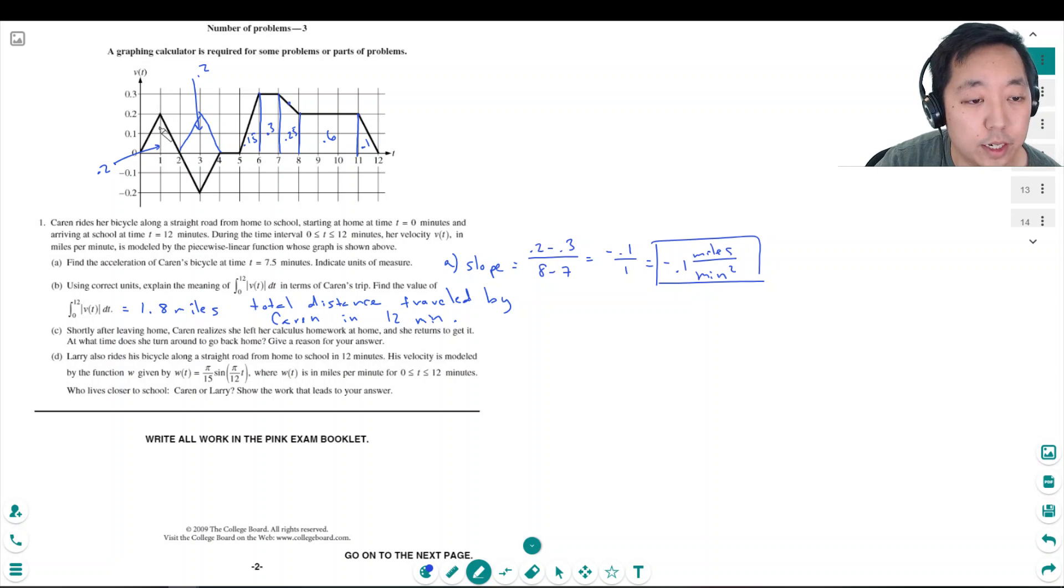It looks like here, because at t equals 2, because her velocity goes from positive to negative. That's a change in direction, right? Because she's going one way that's positive and then she starts going negative. That's the other way that's turning around to go home. So t equals 2.